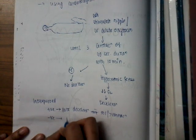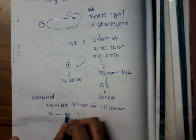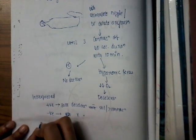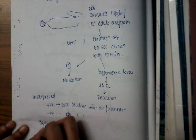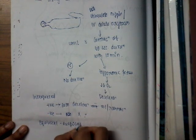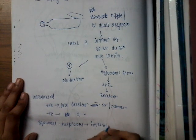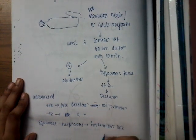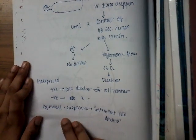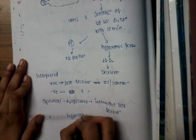The test is said to be negative if there are no decelerations at all. Sometimes the test is also called equivocal or suspicious. We say it is suspicious or equivocal if there are intermittent late decelerations — that is, decelerations that are not consistently following contractions.